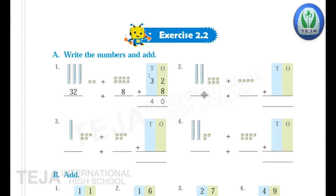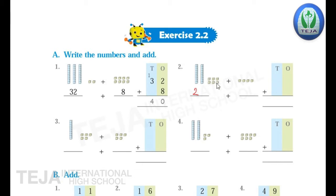See the second question children. Here how many blocks are there? How many standing lines are there? 2 are there — 1, 2. The lines in blue color are 2, so write 2 in the 10's place. Next here, how many cubes are there children? Count the cubes: 1, 2, 3, 4, 5, 6. So 6 cubes are there. Write 6 in the 1's place. So the first number is 26.